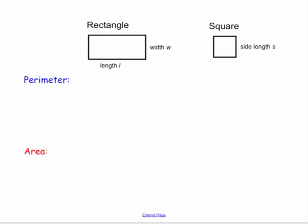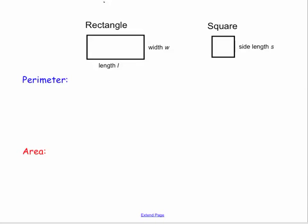For this lesson, I'm going to review perimeter and area for a rectangle and a square. So let's begin with the perimeter for the rectangle.